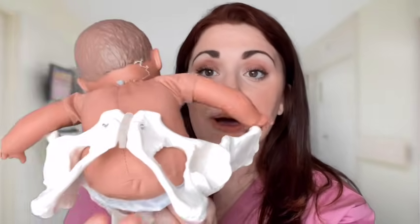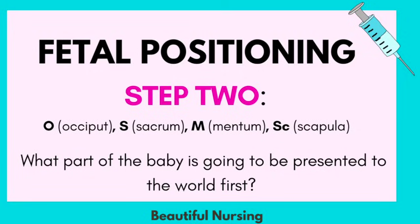Step two: you want to figure out what the presenting part is. What part of the baby is going to be first presented to the world? Is it going to come buttocks first? Is it going to come head first? So that's looking at occiput — head first — sacrum — buttocks or feet first — mentum — chin first — or scapula — shoulder first.